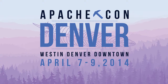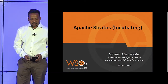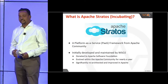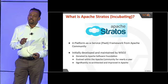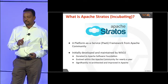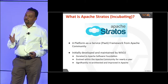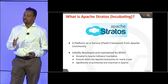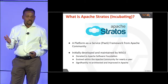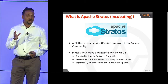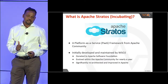I'm here to talk about an incubating project at Apache called Apache Stratos. Apache Stratos is a PaaS framework from the Apache community. This was initially developed and maintained by WSO2 some time back, but it was donated to Apache about a year ago. Once donated, it has been evolving with the Apache community and has been undergoing a major revamp in terms of architecture and design as an Apache project.